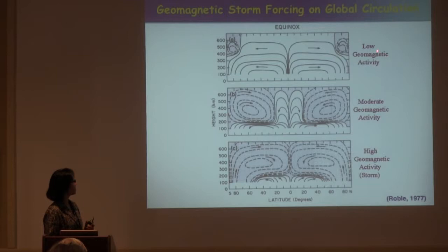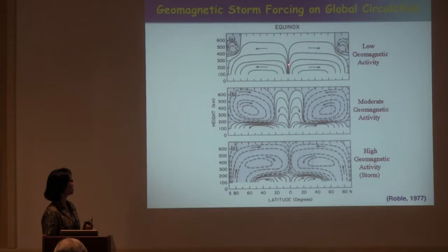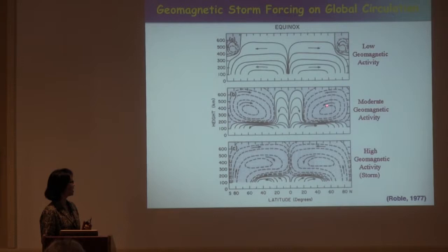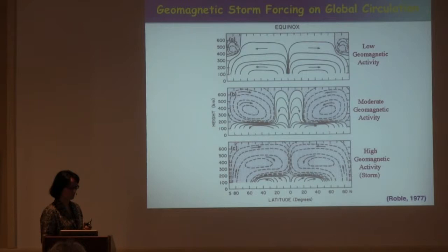In terms of thermosphere dynamics in response to geomagnetic storms, it is very well described by a cartoon from about 35 years ago by Ray Robo. During quiet time, the primary circulation of the thermosphere is mainly from equator to pole, driven by solar heating. At high latitude, you have a reversed circulation due to weak energy input in the auroral zone. As activity intensifies, the high-latitude reverse circulation becomes more intensified, and during major storms, those reversed circulations can totally overtake the normal equator-to-pole circulation.